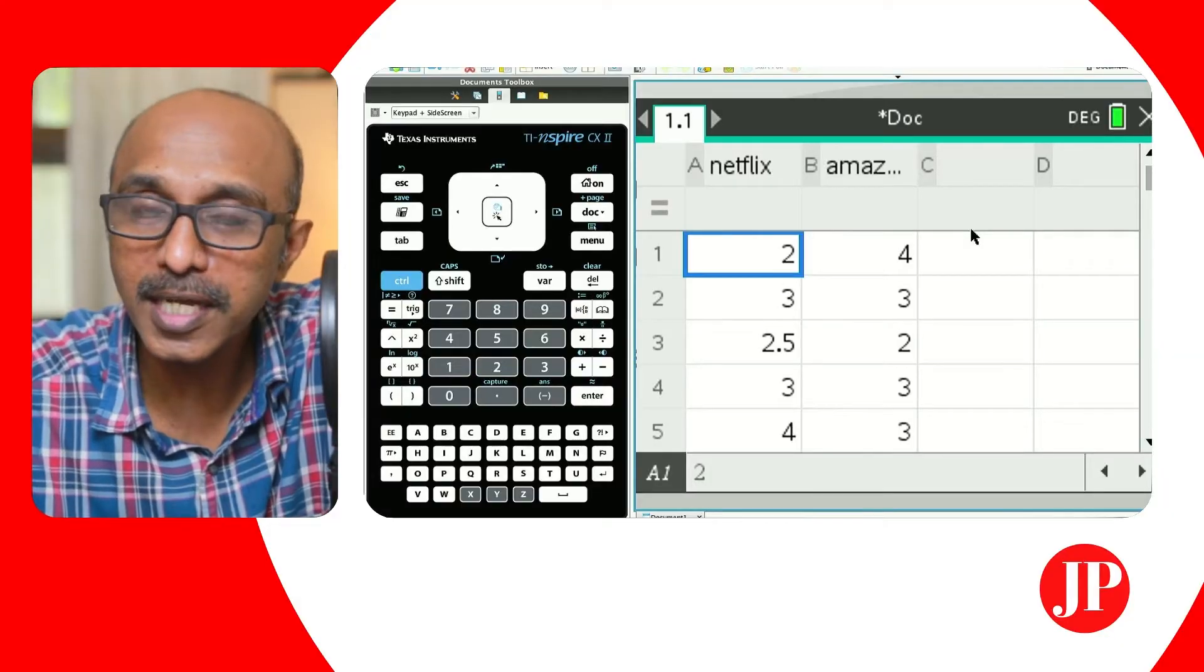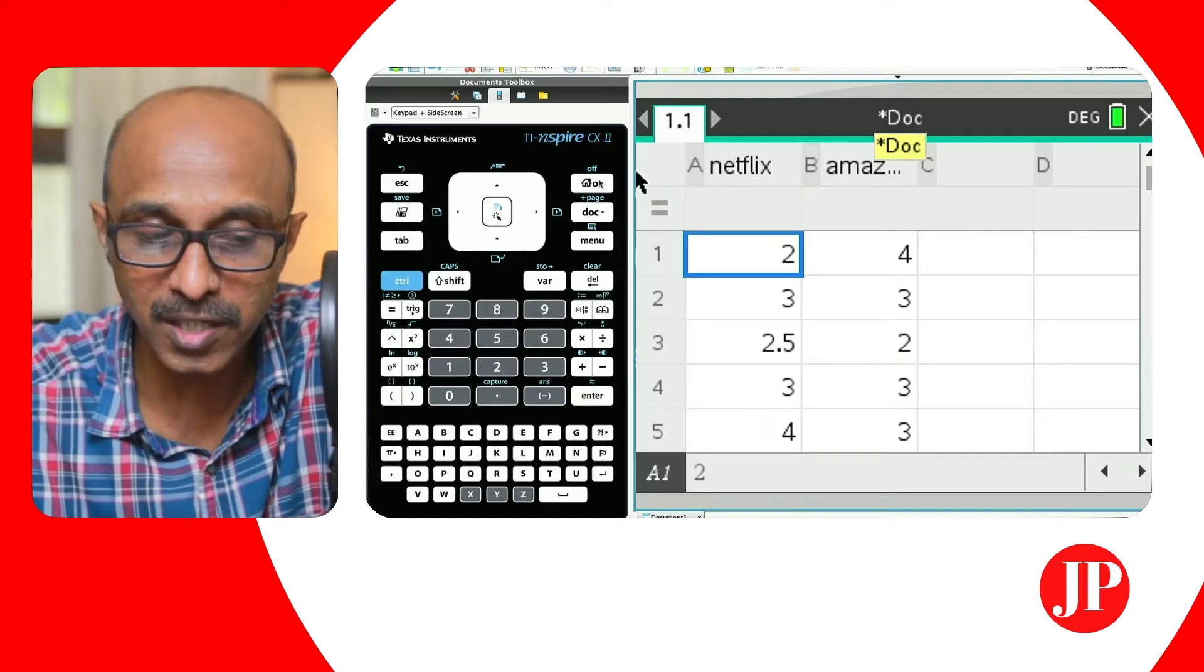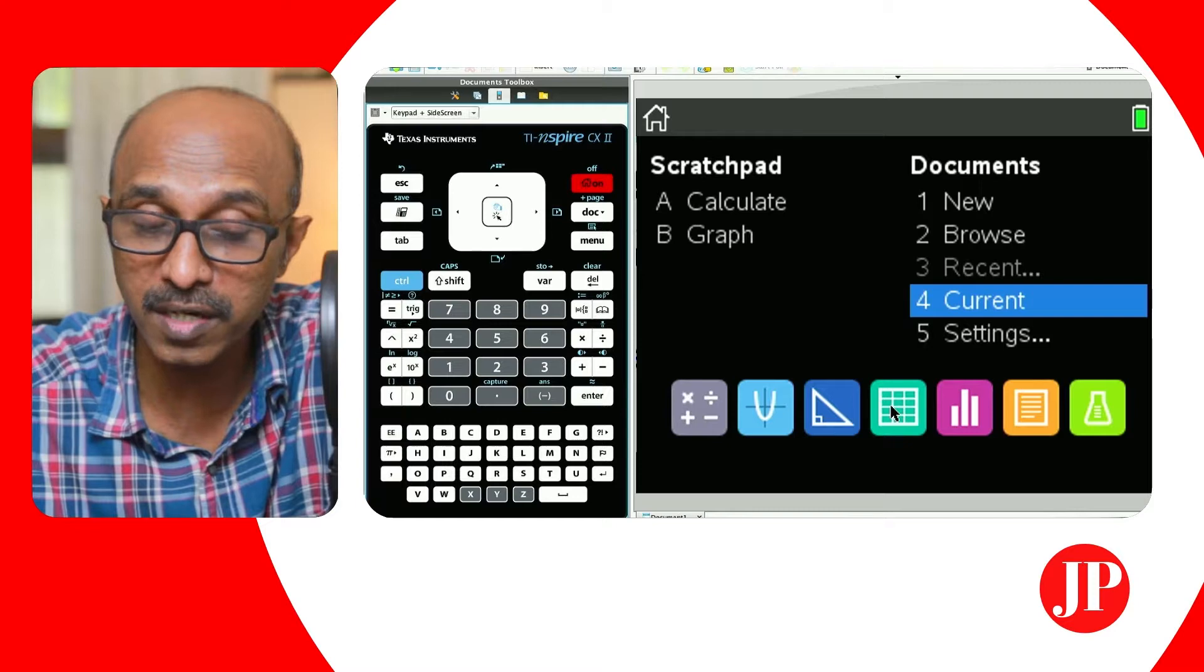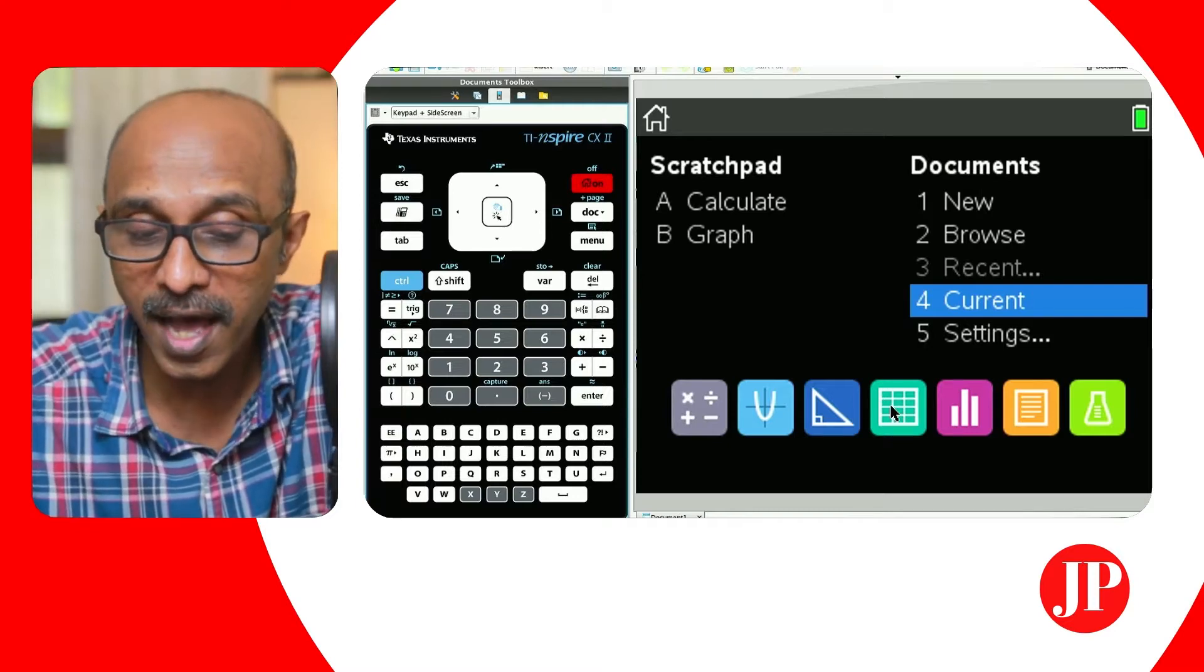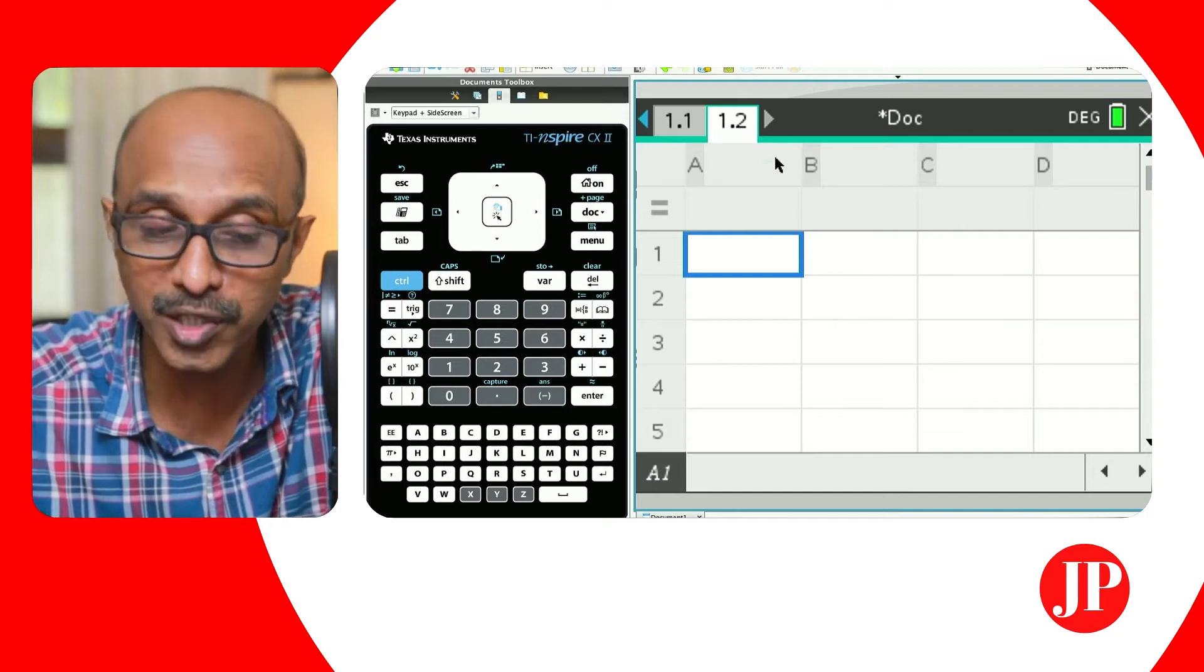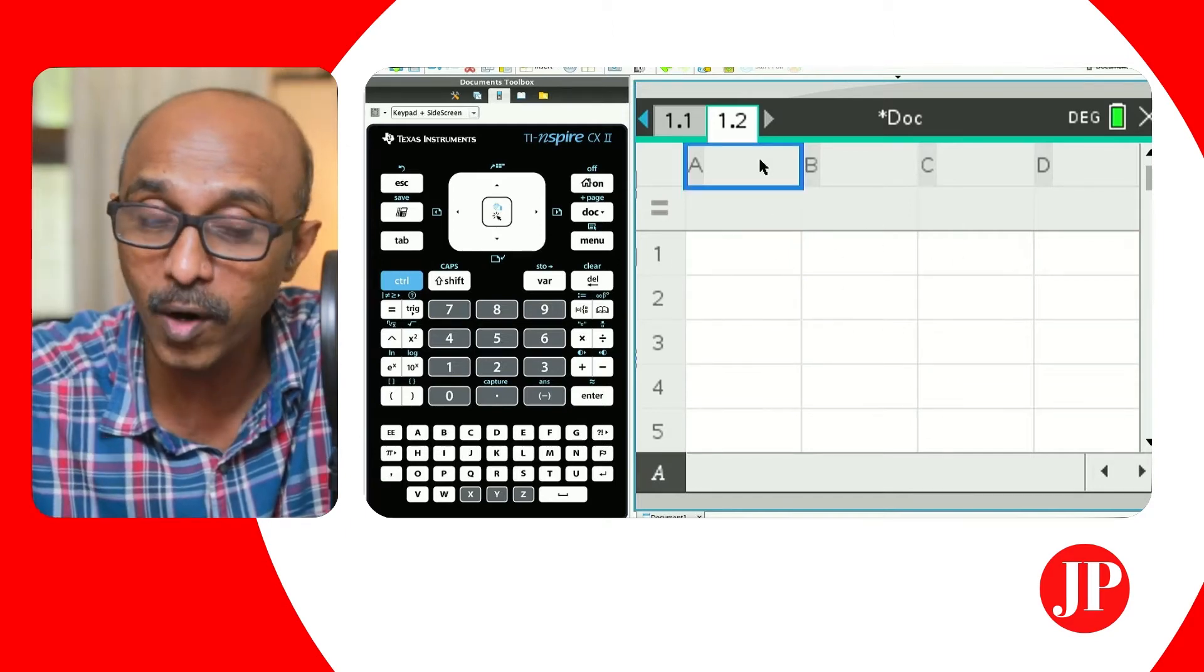I have already entered the data on the list and spreadsheet page. For those of you who don't know how to get to this page, from the home screen, you can just hit this icon, which represents the list and spreadsheet page. And once you hit that, it will give you something that looks like an Excel spreadsheet, and then you can enter the data. Be careful how you label the column.